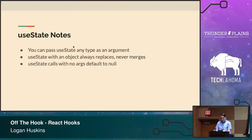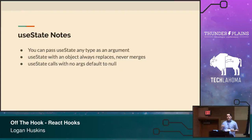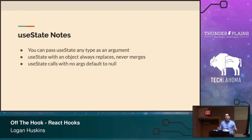A couple of notes about useState. You can pass useState any type as an argument — an empty string, a number, an array, an object, or nothing which defaults to null. But you need to be careful: useState with an object always replaces and never merges. When you call this.setState in a class component, it merges your old state with your new state. useState replaces the entire object. So it is typically recommended that if you are tracking multiple things, you call multiple useStates — one for message, one for color, and so on.